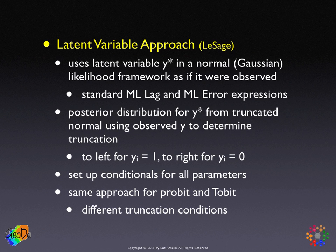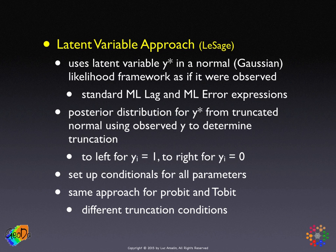In the Bayesian approach, we'll do something similar, and we'll get a distribution for the latent variable from the truncated normal based on whether y sub i is a 1 or a 0. If it's a 1, it's truncated to the left because we know the latent variable is larger than 0. If y sub i is 0, we truncate on the right because y star has to be negative, and this is then used in a sampling routine.